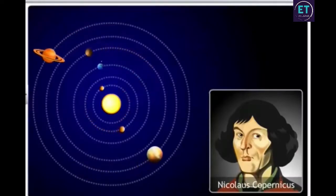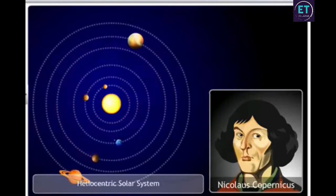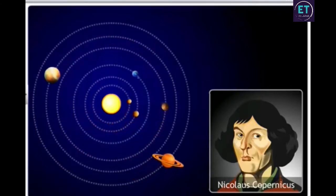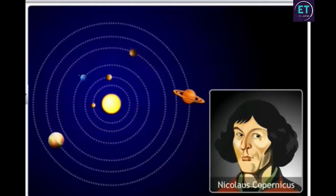Then came Nicolas Copernicus, who presented a heliocentric solar system. This model showed the sun at the center of the solar system with planets revolving around the sun in circular orbits.